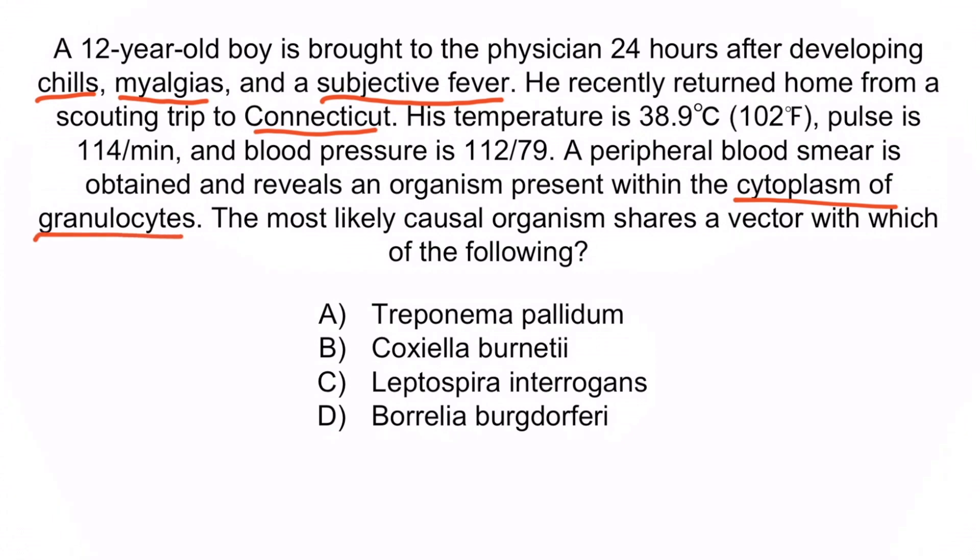Remember, both Ehrlichia and Anaplasma present with non-specific symptoms, an absence of a rash, and usually occur in someone who lives on or has recently traveled to the East Coast. However, Anaplasma is associated with granulocytes and Ehrlichia is associated with monocytes. So we can be confident that this patient has anaplasmosis, and the correct answer is D, Borrelia burgdorferi.